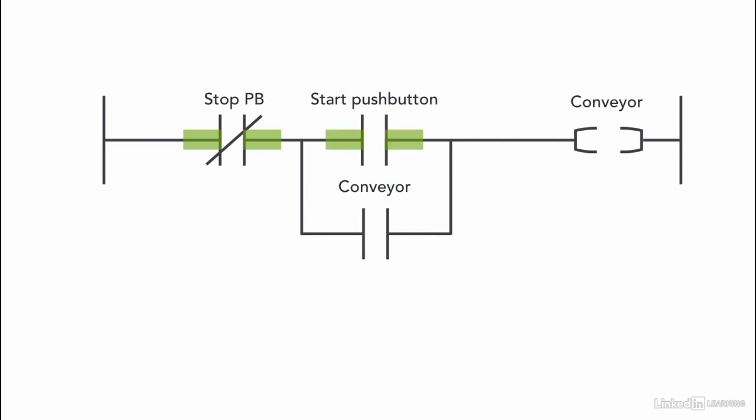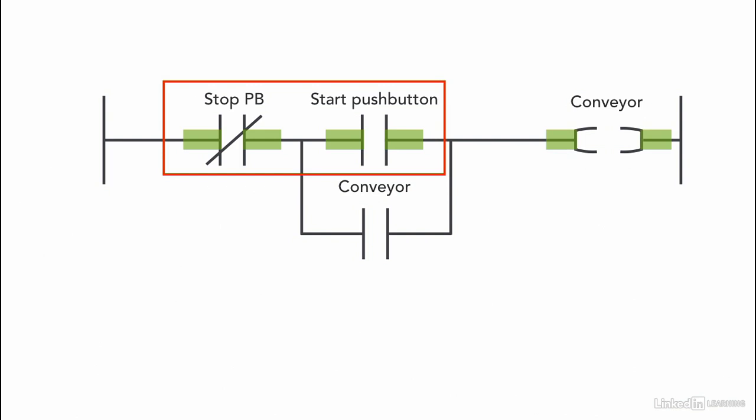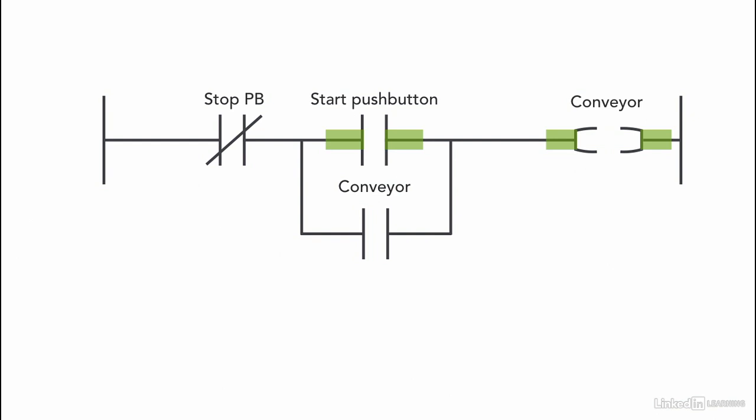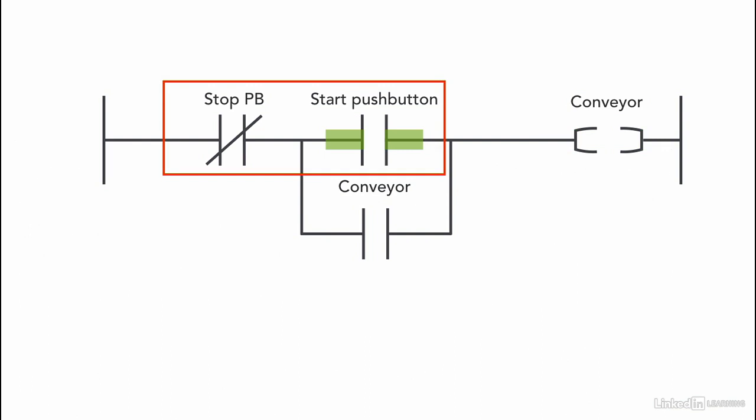The stop push button instruction is highlighted, and as soon as the start push button is pressed, the conveyor starts. When both inputs are on, the output is on as a result. The CLN instruction works the same way — the output will stay on even if the start push button is released. As soon as the operator presses the stop push button — remember it's a normally open contact — it changes state to one, meaning the XIO instruction is no longer activated. As a result, the conveyor stops, even if the start push button is on, because both instructions need to be activated for the conveyor to stay on. The two instructions are in series, so both need to be on for the output to stay on.